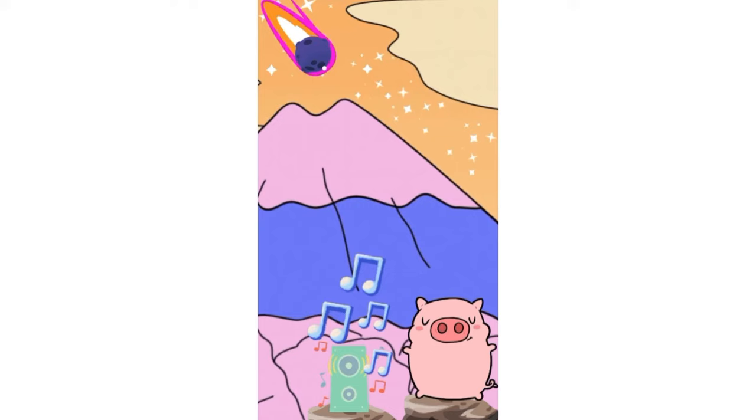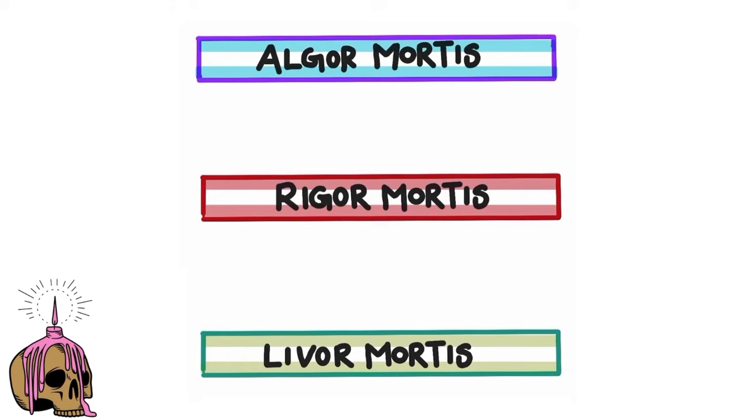The important early post-mortem changes are algor mortis, rigor mortis, and livor mortis. We'll see each of these in detail in this video.